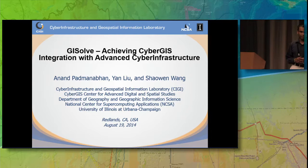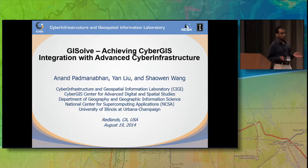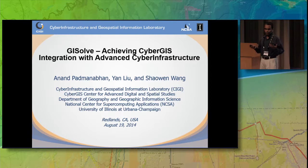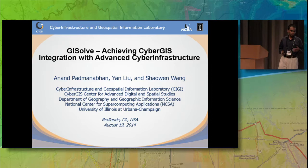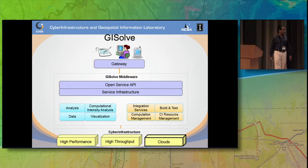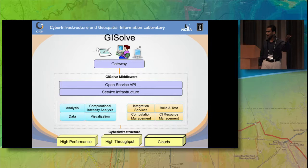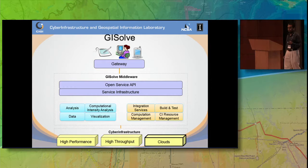We have seen two pieces — the gateway piece as well as the toolkit piece — so now we are going to talk about something which bridges between these two things: our middleware. The GIS Solve middleware has been in development for a while. It basically serves as a bridge from the gateway, which is for a broad audience, to the middleware, which is for a specialized audience like Ian, who can do really high-end parallel computing, use 131,000 cores — which is not really everyone. So this middleware is there to bridge this gap. Right now we have what's called the Open Service GIS Solve Open Service API.